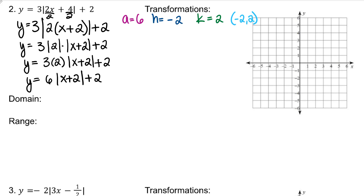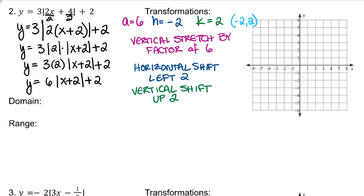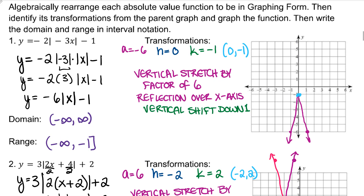Let's determine the transformations. When A equals 6, we have a vertical stretch of 6. Because A is positive, we do not have a reflection about the x-axis. We do have a horizontal shift left 2 because H is negative, and up 2 because K is positive. Plot a point at the vertex. My slope to the right is positive A — up 6 and to the right 1. My slope to the left is negative A — up 6 and to the left 1. The domain is negative infinity to infinity. The range starts at 2 and goes to positive infinity. The y-value of the vertex is always included — it's either the smallest or largest y-value depending on the direction.